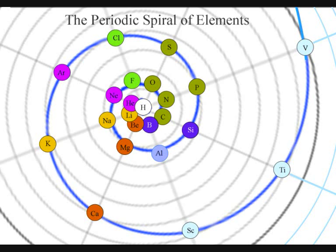Also, by having a periodic spiral, we place the groups of elements that can undergo ionic bonding together on either side of the noble gases.